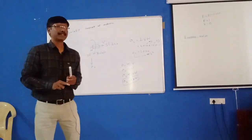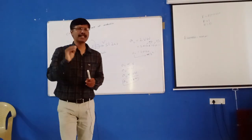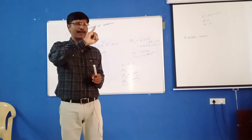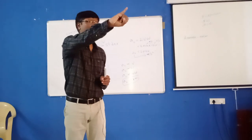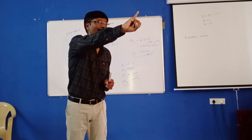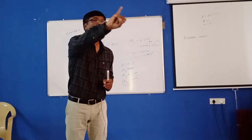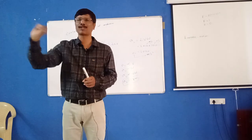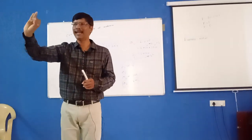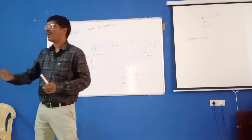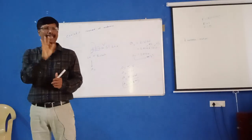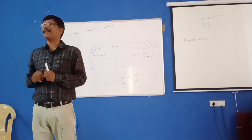There are two ways in this. One is unit — for every variable, you should know the unit. What is the unit of acceleration? Meter per second square. What is the unit of sliding velocity? Meter per second. What is the unit of angular velocity? Radians per second.